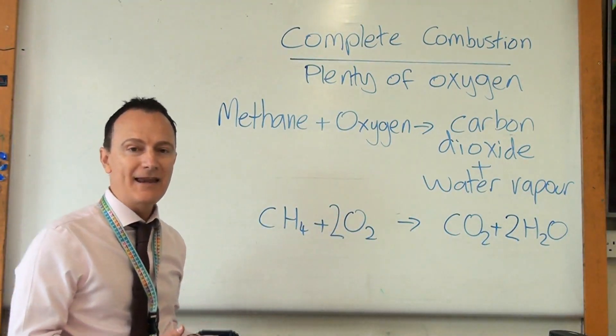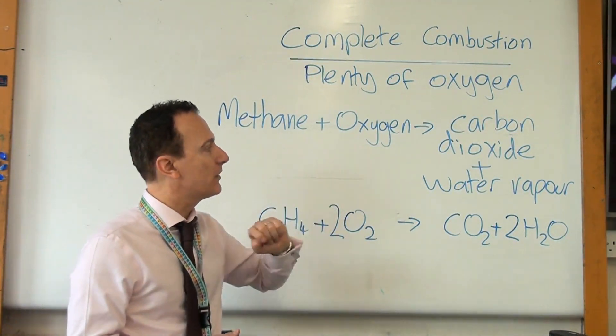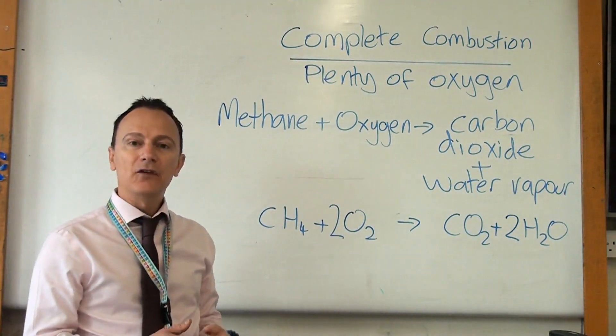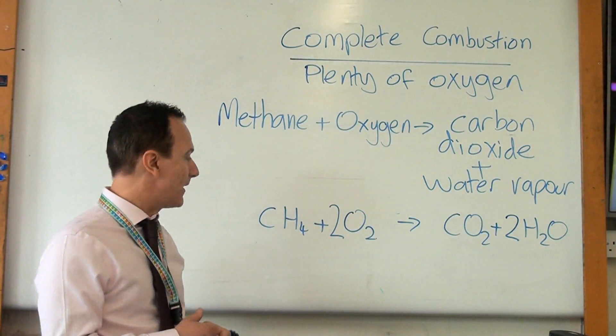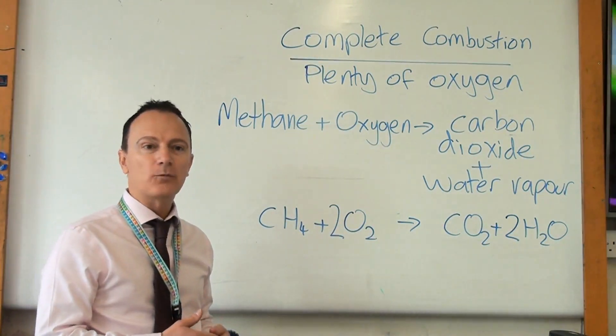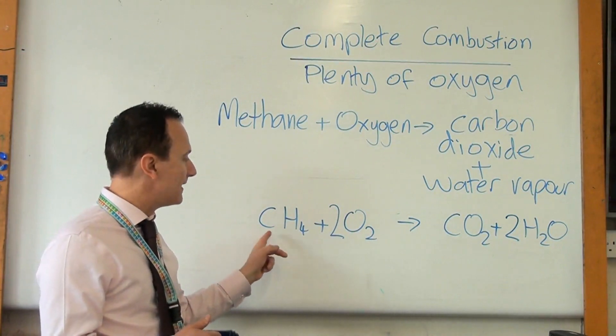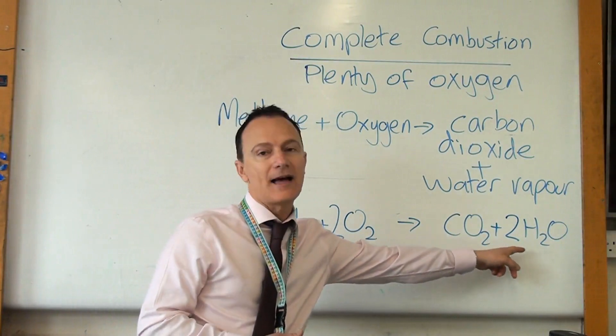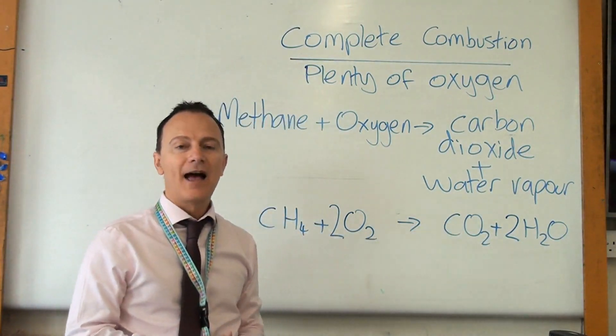So if the fuel was methane like what we burn in a Bunsen burner it would be methane plus oxygen makes carbon dioxide and water vapour. And if you study for the higher paper you also need to be able to write the symbol equation so we know methane has one carbon atom because it's an alkane we double it and add two so it's going to be CH4 plus oxygen makes carbon dioxide and water vapour and then a little bit of balancing at the end.